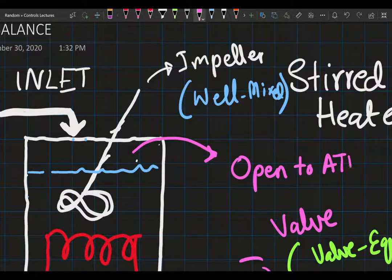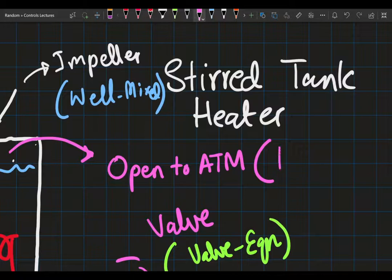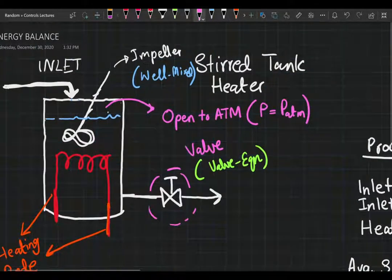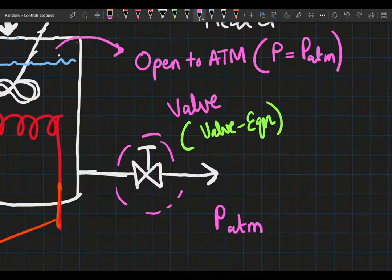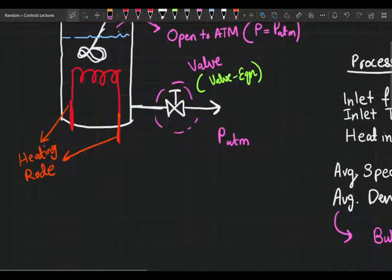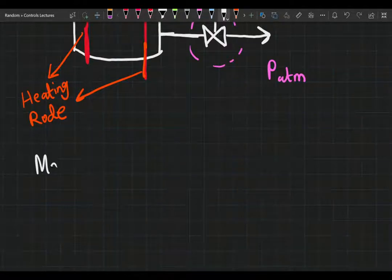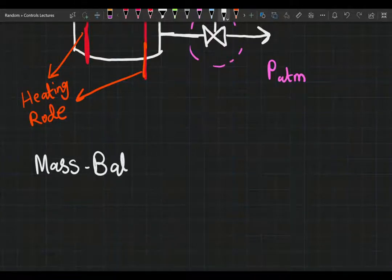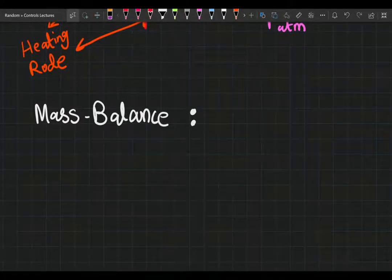If it is open to atmosphere, then that means the operating pressure, the overhead pressure, is gonna be the atmospheric pressure. Similarly, this valve is discharging at the atmospheric pressure. Given all of that information, like every good chemical engineer, we're gonna start off with a mass balance. Mass is conserved unless you're in a nuclear power plant.